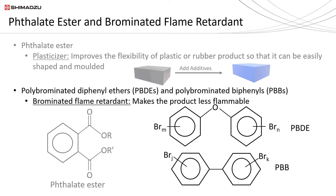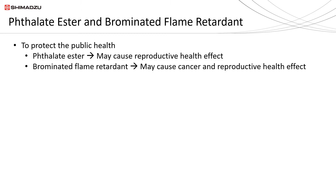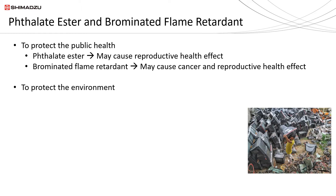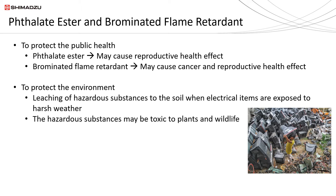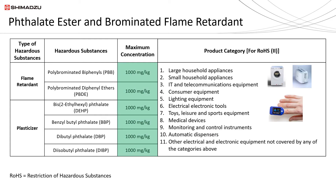If phthalate esters and brominated flame retardants are so useful, why is there a need to regulate these substances? First of all, it is to protect public health. Studies had shown that exposure to phthalate esters may cause reproductive health effects, while brominated flame retardants may cause cancer and also reproductive health effects. Another reason is to protect the environment. Large amounts of electrical waste may be dumped in open environments, and when exposed to harsh weather, there is a possibility that hazardous substances may leach into the soil. These substances may be toxic to plants and wildlife too. To prevent brominated flame retardants and phthalate esters from causing health effects and damaging the environment, they are regulated and must not exceed the limits shown in these tables.